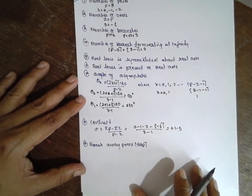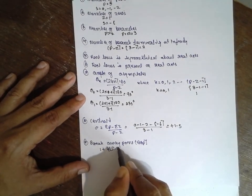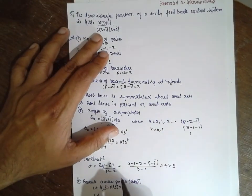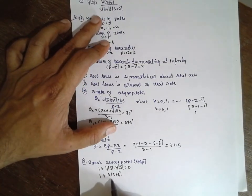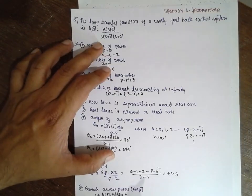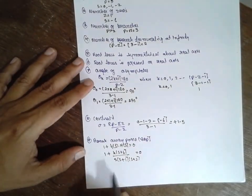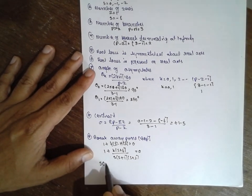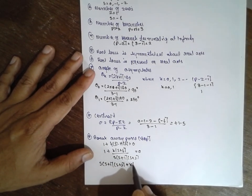Now breakaway point. The characteristic equation: 1 plus G(s)H(s) is equal to 0. Writing the open-loop transfer function: K(s plus 6) divided by s(s plus 1)(s plus 2) equals zero. This can be rewritten as s(s plus 1)(s plus 2) plus K(s plus 6) is equal to 0.